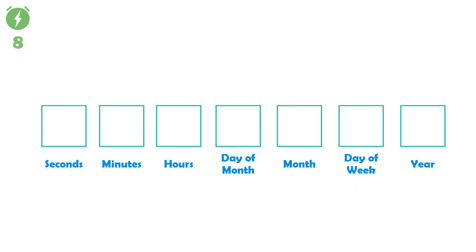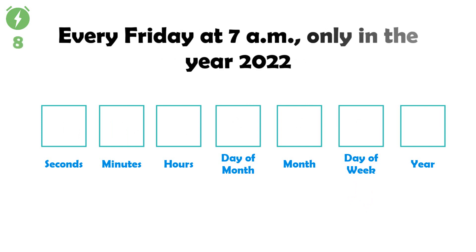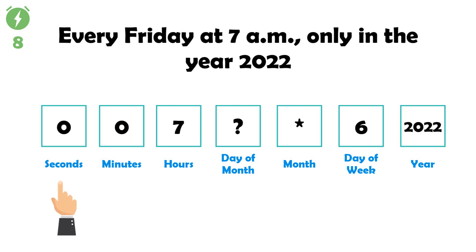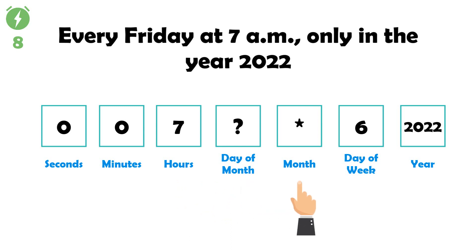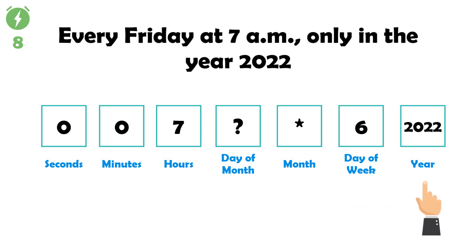The eighth and last example: every Friday at 7 a.m. only in the year 2022 — '0 0 7 ? * 6 2022'. Zero in seconds, zero in minutes, seven in hours, question mark in day of month, star in month, six in day of week means Friday, and 2022 in the year field means it should only be triggered in 2022.